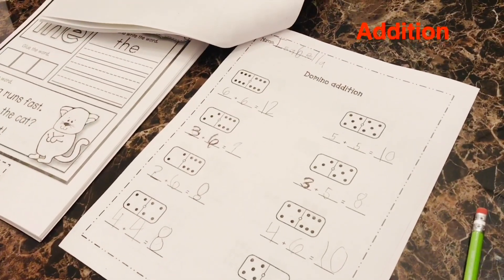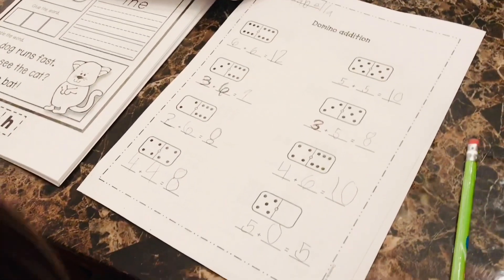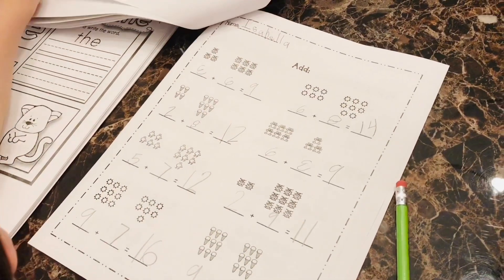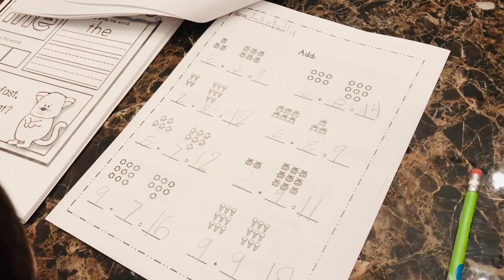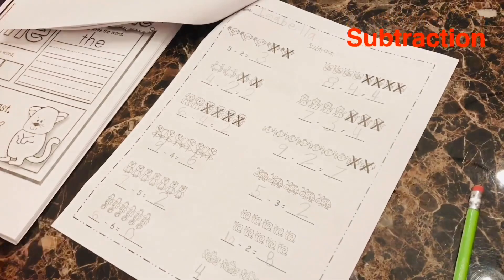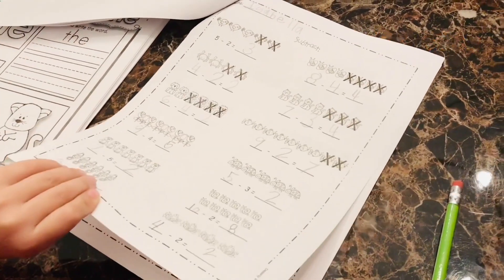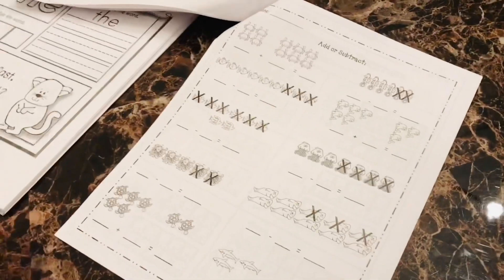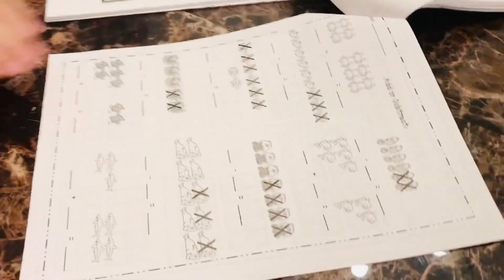So color by number, then you're done. Domino addition. Another addition.